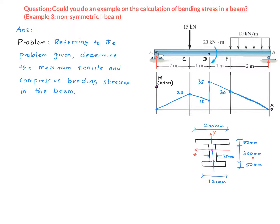The cross-section of the beam is this. So why do I call this a non-symmetric I-beam? If you look at this cross-section carefully, you see there is one vertical line of symmetry right there.